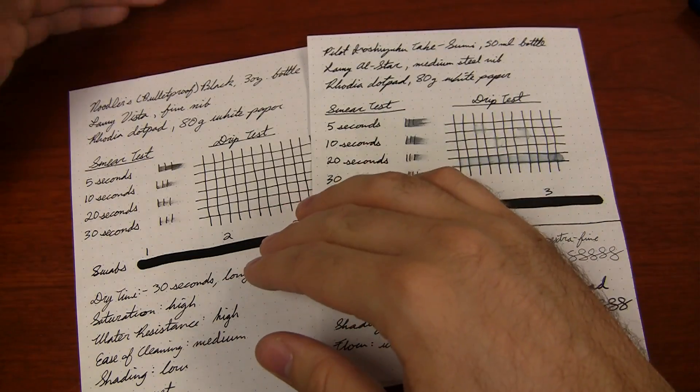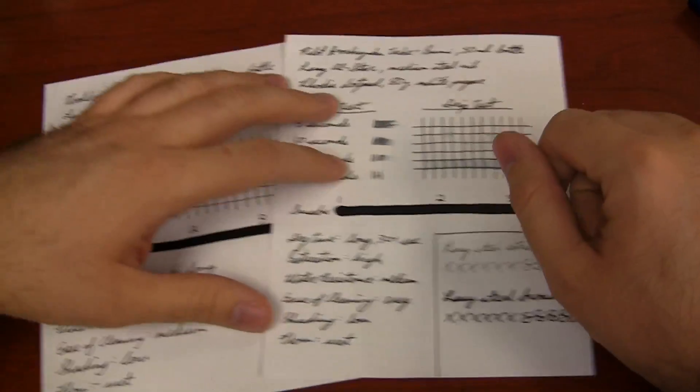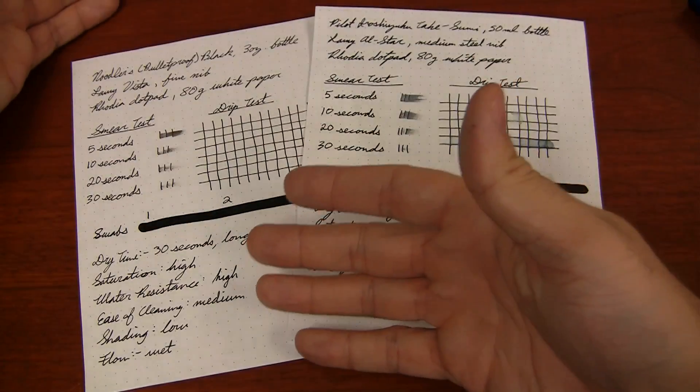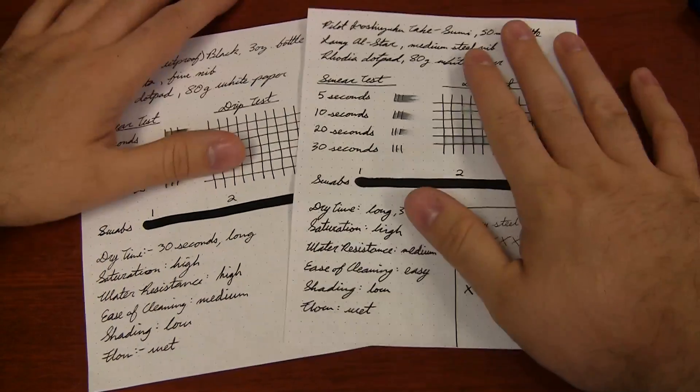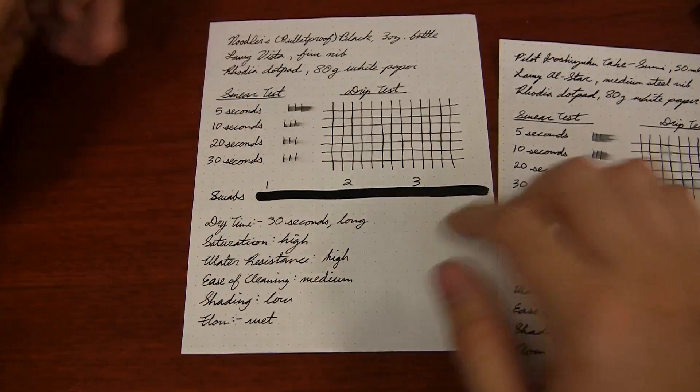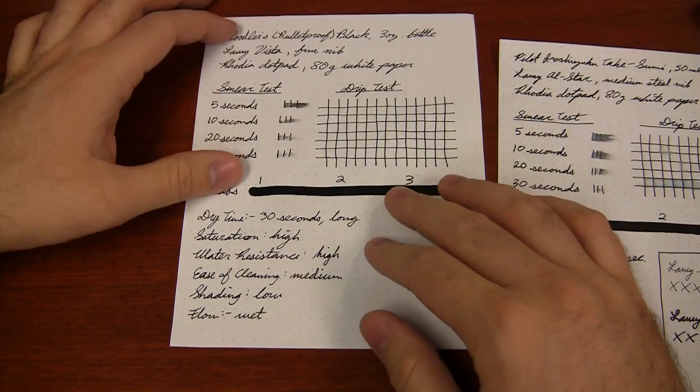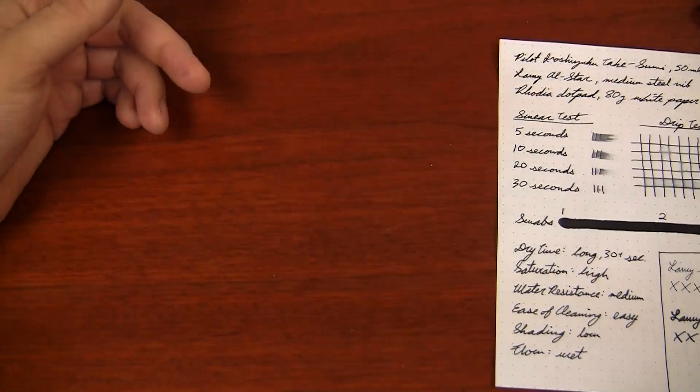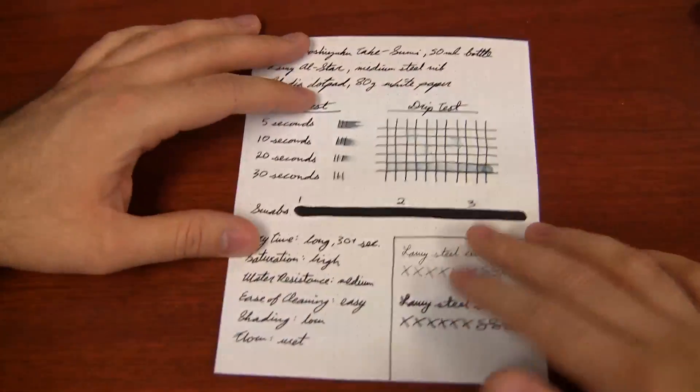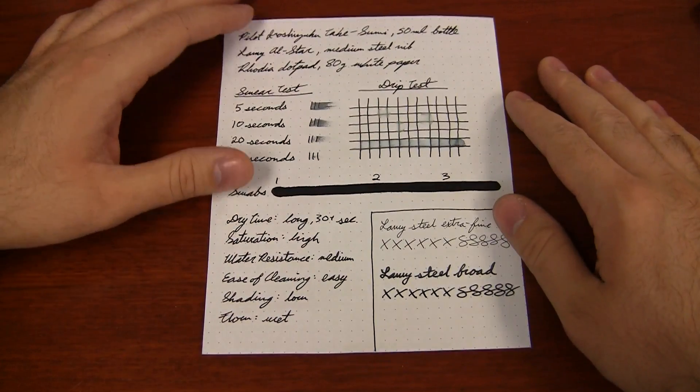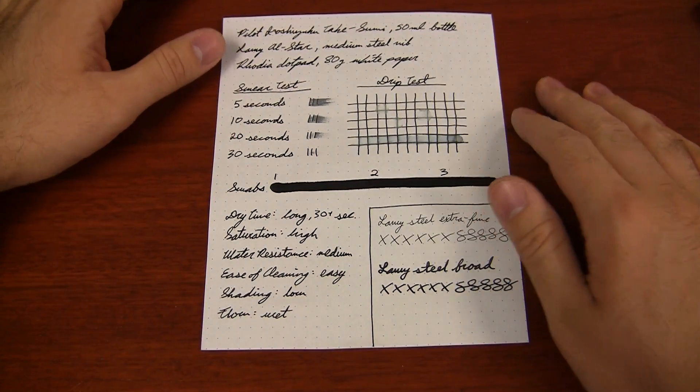The thing you're getting with Noodler's Black, though, is water resistance. Doing the same test, you can tell the difference there. But it's a little bit harder to clean out of the pen. If you spill it on your clothes, it's going to stain. So there are definitely some things to weigh out. Of course, the Noodler's Black is also a quarter of the price. So definitely some factors involved there. But I did want to compare that just because it is such a monumentally compared to black ink. It's just such a staple in the ink world.